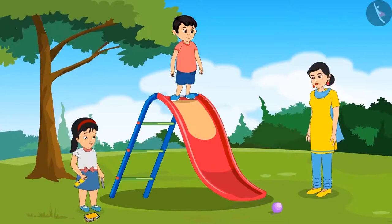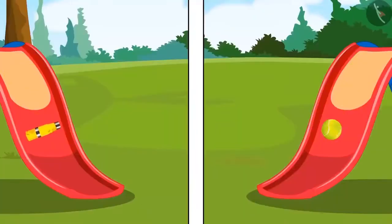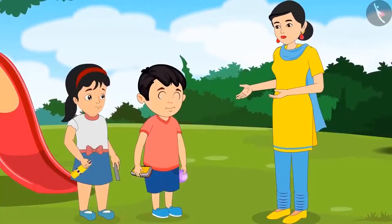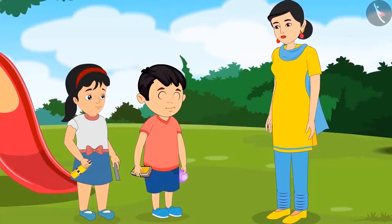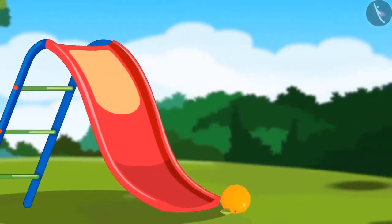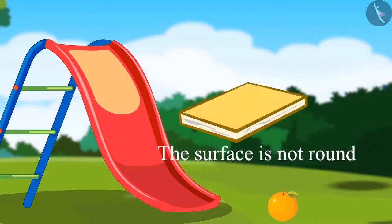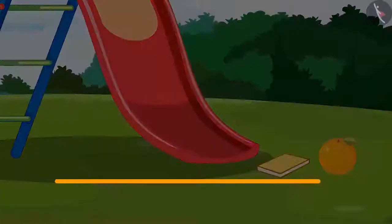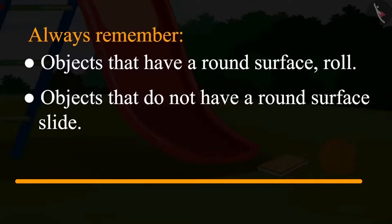Yes Chotu. The objects that have a round surface, they roll — just like this orange, it is round so it will roll. And if the surface is not round like this notebook, then it will slide. So children, did you see? Objects whose surface is round, they roll. And objects whose surface is not round, they slide down.